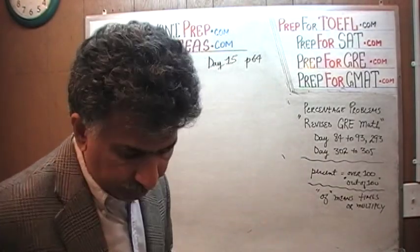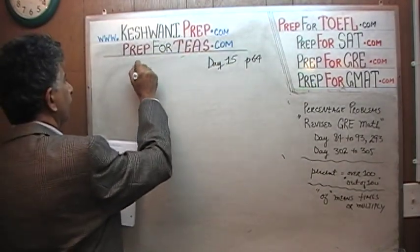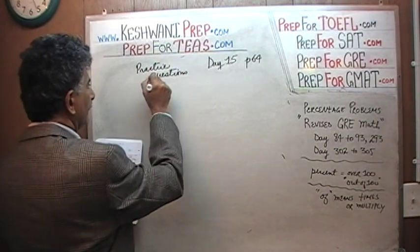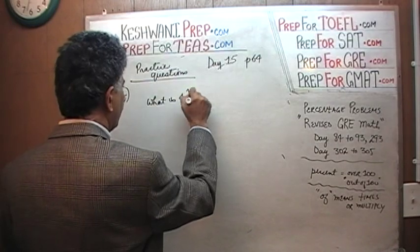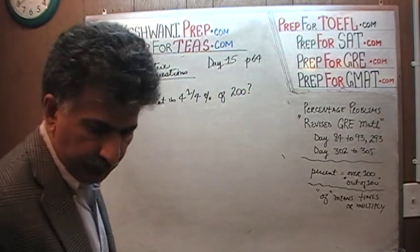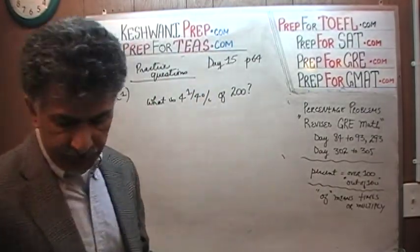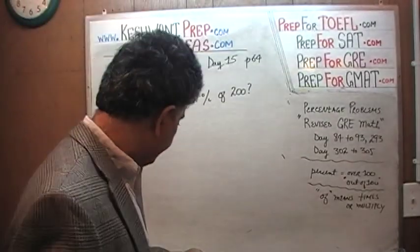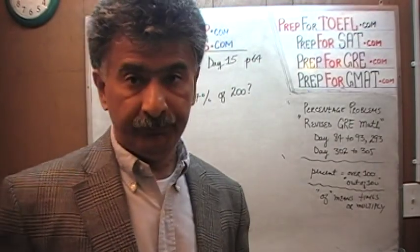There are practice problems at the bottom of the page — three of them. Those are the ones we are going to do. Practice problems. Number 1. It says: what is 4.25% of 200? To which my answer would be: how the hell do I know? Give me a calculator and I'll tell you. Unfortunately, you do not have access to a calculator. We have to do it manually. So let's do it, shall we?